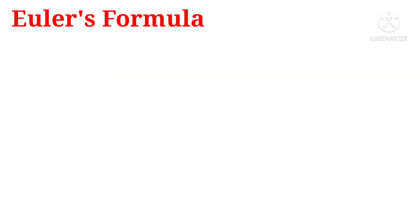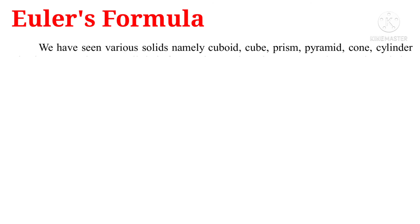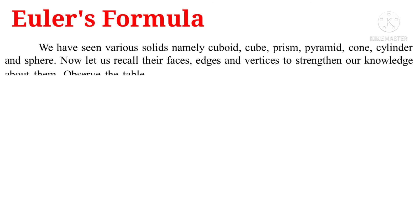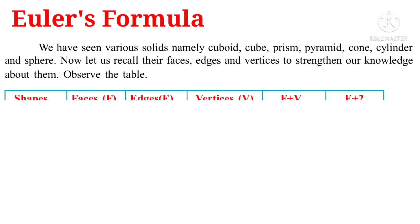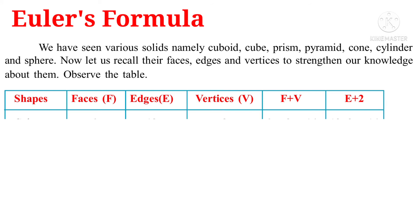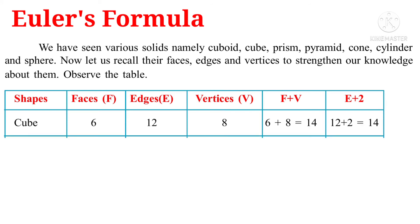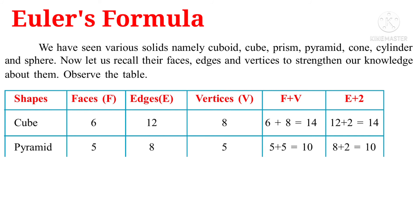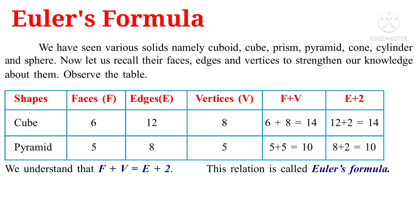Now let us learn Euler's formula. The scientist Euler found a relationship between the faces, vertices, and edges of 3D shapes. For a cube: 6 faces, 12 edges, 8 vertices. F plus V equals 6 plus 8 equals 14, and E plus 2 equals 12 plus 2 equals 14 — they are equal. For a pyramid: 5 faces, 8 edges, 5 vertices. F plus V equals 5 plus 5 equals 10, and E plus 2 equals 8 plus 2 equals 10. So Euler's formula is: F plus V equals E plus 2.